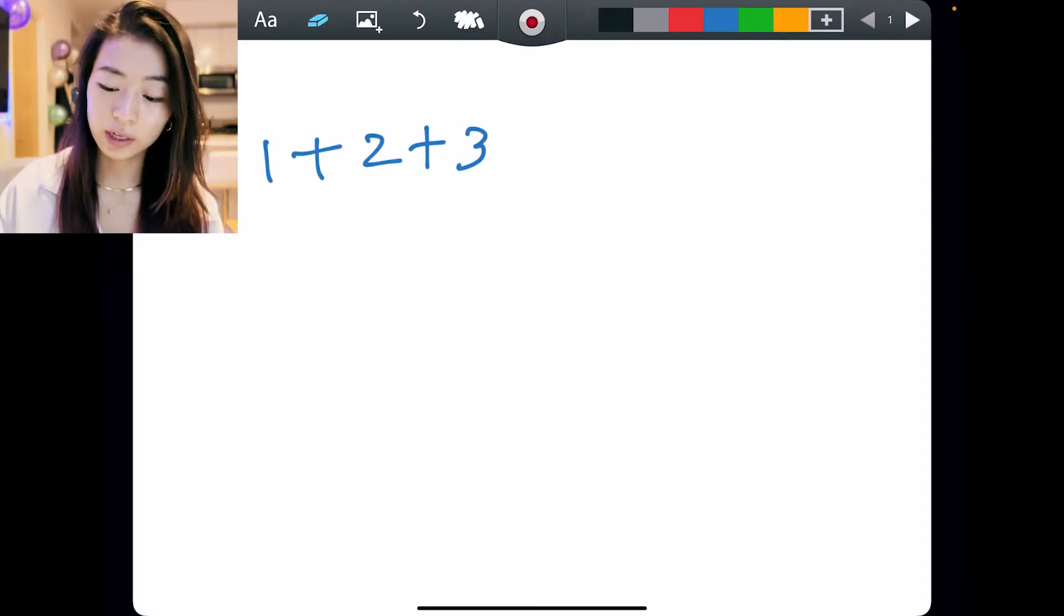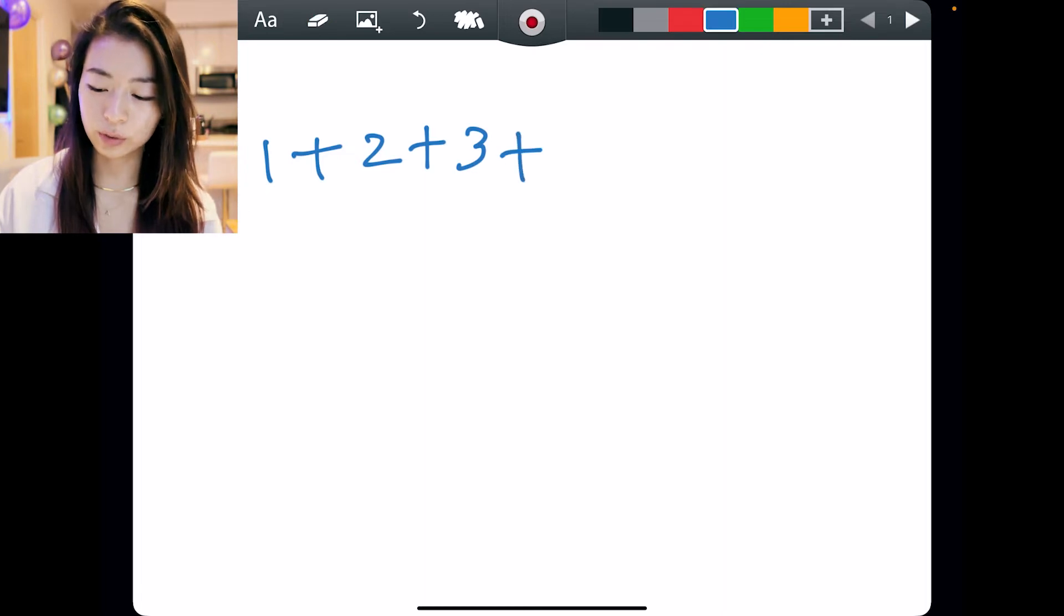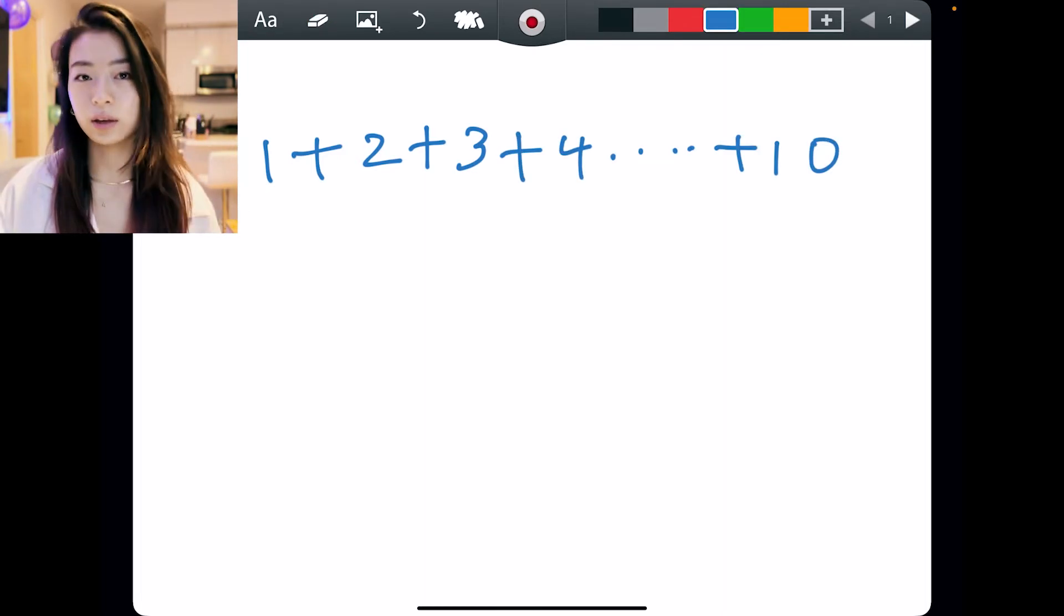As always, we want to try and find the formula ourselves by understanding the logic using small examples. If instead our question is 1 plus 2 plus 3 plus 4 all the way to plus 10, then how would we do this?